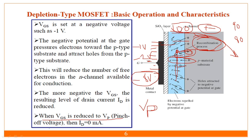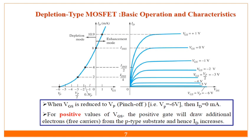When VGS is reduced to the pinch-off voltage, ID equals zero. When VGS is zero, maximum current flows. As we go more negative, current decreases to zero at the pinch-off voltage. For an N-channel depletion type MOSFET, we apply negative potential to turn off the device. Conversely, applying more and more positive voltage causes more current to flow.